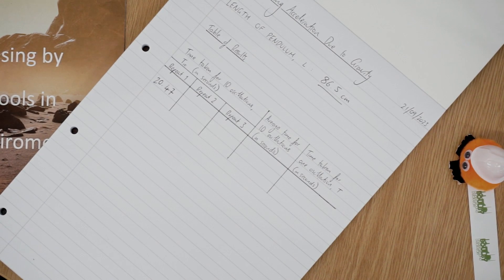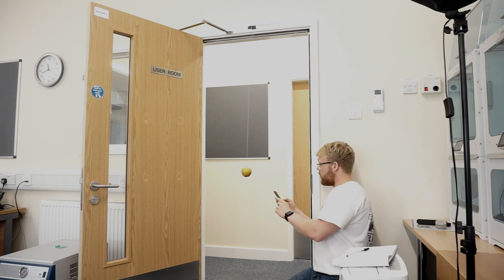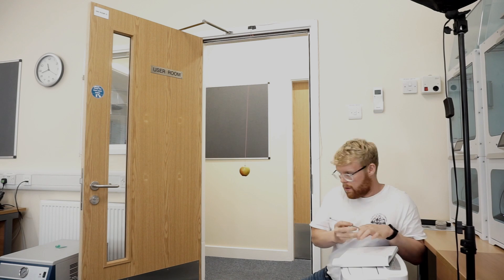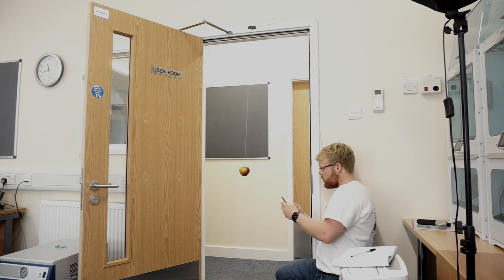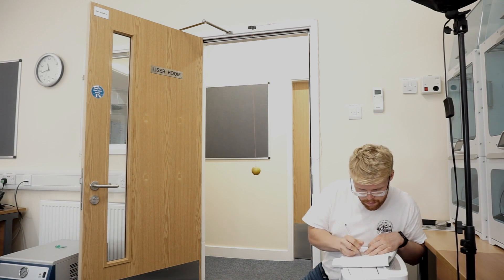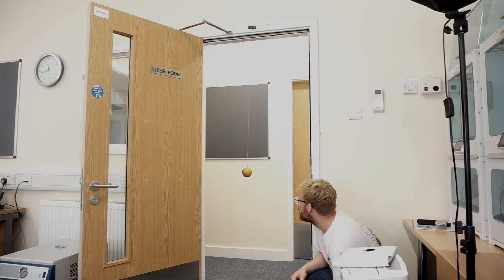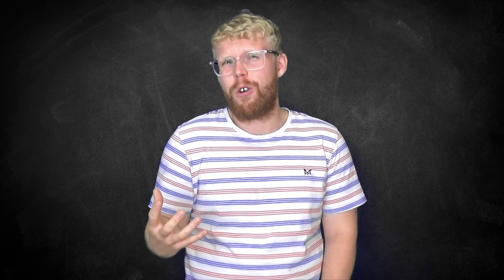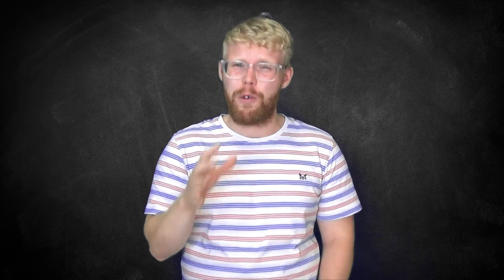Helpful hint: make your table of results beforehand. If you want a better result, repeat this experiment three or more times and then find a mean average of all of the times. That average will then be your best measurement of time taken for 10 oscillations. Now for some more involved maths — if you'd like to skip this part, you can use our online calculator tool to find your value of G. Just follow the link at the top of the description.